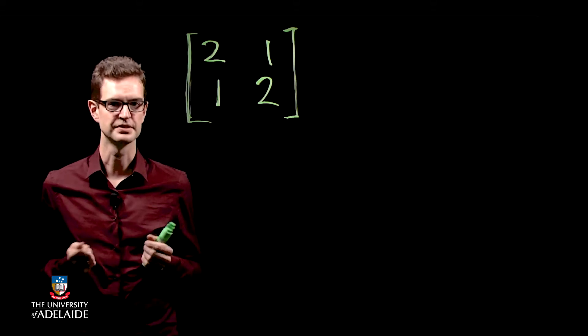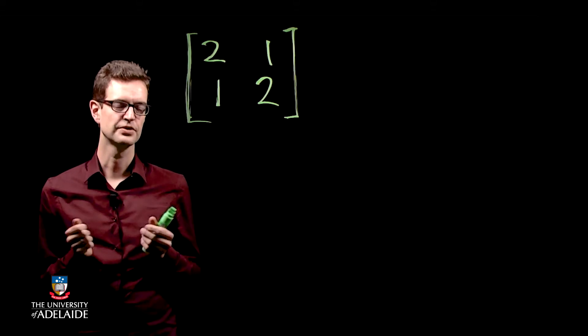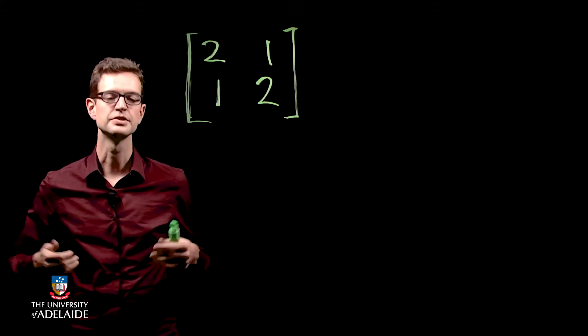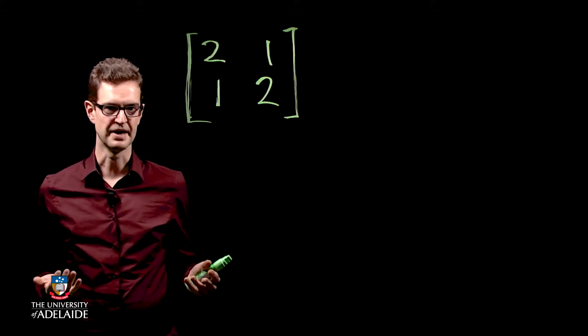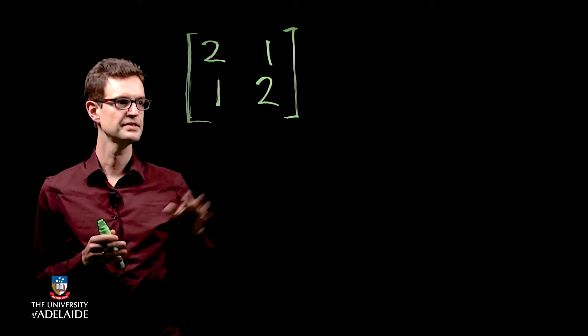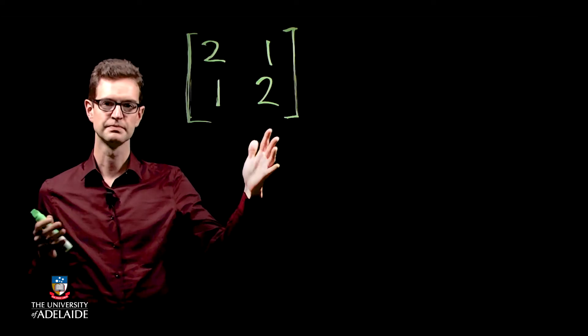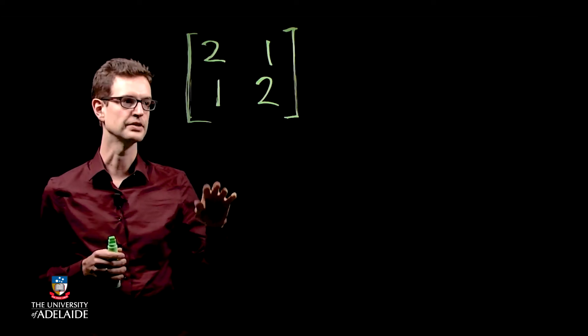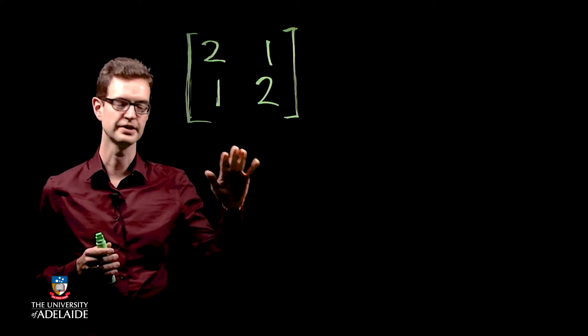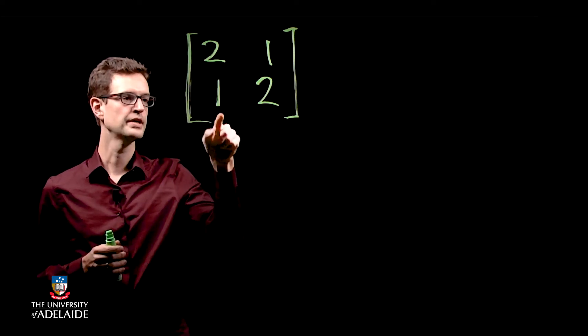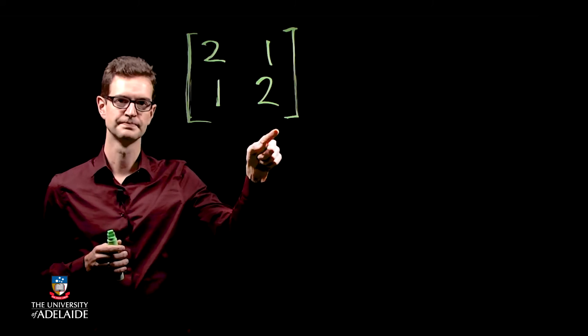So first, matrices. Matrices are grids of numbers which are sometimes useful in mathematics. Here's your first matrix — this is what we call a two by two matrix because it's got two rows and two columns.